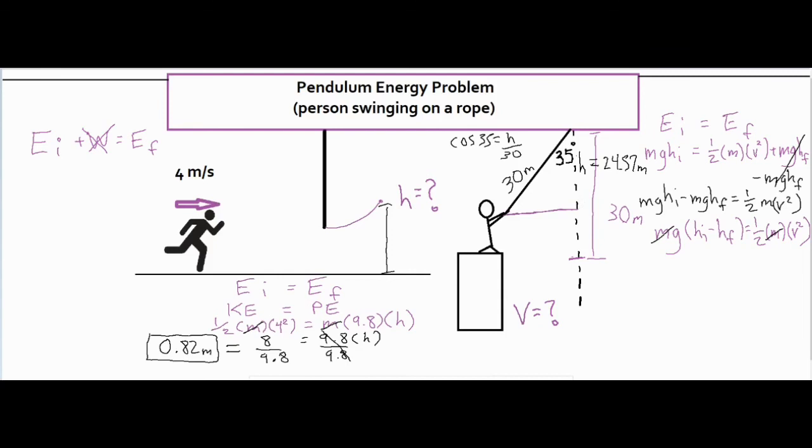So the difference between those is the only number that I need from here to here. So if I subtract these two numbers, I get a difference of 5.43 meters. Now that's all I'm concerned about. I just wanted the difference between the two heights, so I can go ahead and say 9.8 times 5.43 meters equals one-half times v squared.